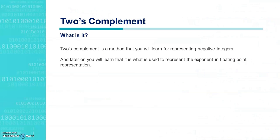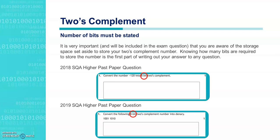So what is two's complement? It is a method for representing negative integers. Later on you'll learn that it's also used to represent the exponent in floating point representation. It's very important that the number of bits is stated when you talk about two's complement. This will be included in the exam question, and the amount of storage space set aside to store your two's complement number needs to be known because it's the first part of writing out your answer.